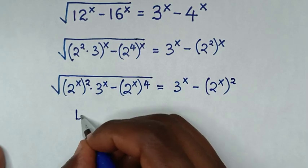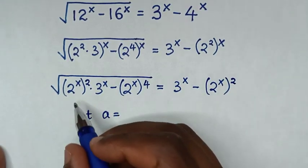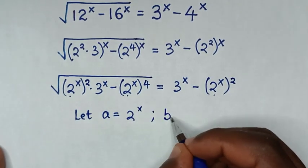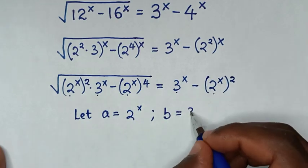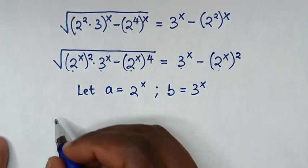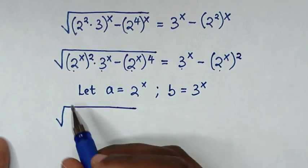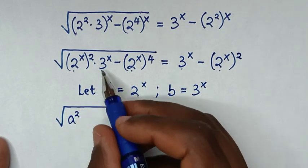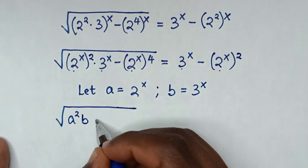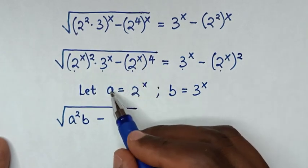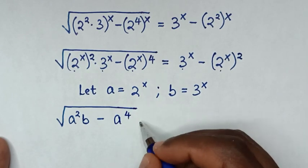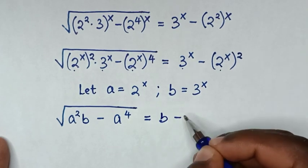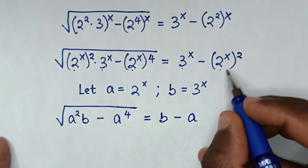In the next step, we let a = 2^x and b = 3^x. So 3^x becomes b and 2^x becomes a. Then minus 2^x is a, so it will be a⁴. We now have: square root of (a²b minus a⁴) equals b minus a².